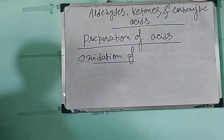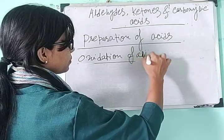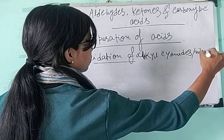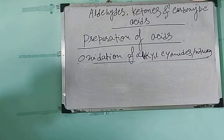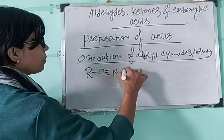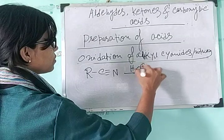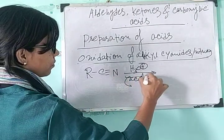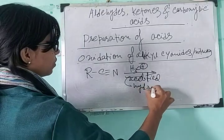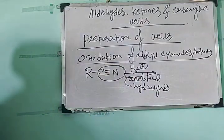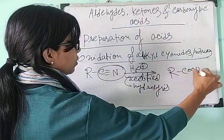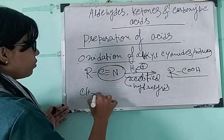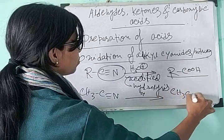The hydrolysis of alkyl cyanides or nitriles. So it is just RCN. If you do acidified hydrolysis with H3O⁺ (dilute acid), then the CN portion will be converted to COOH. So if you just take methyl cyanide (CH3CN), you will get acetic acid (CH3COOH) by this process.